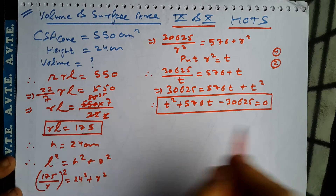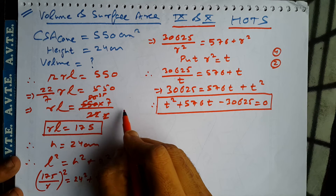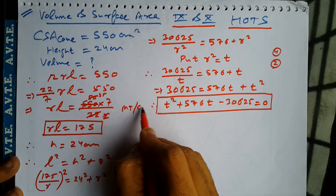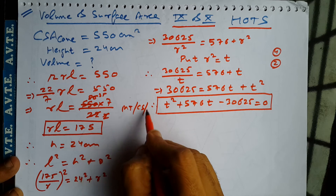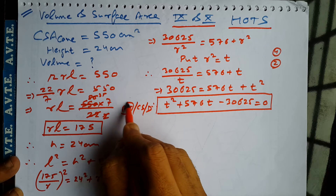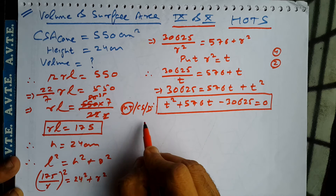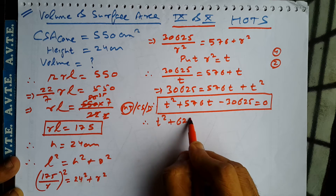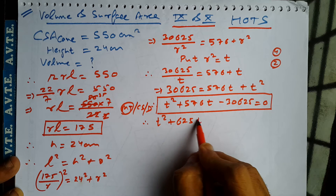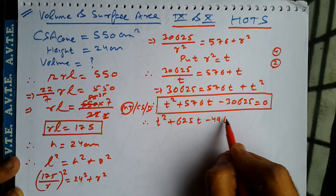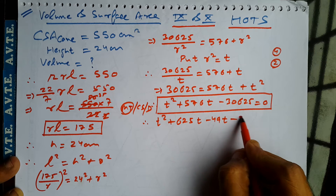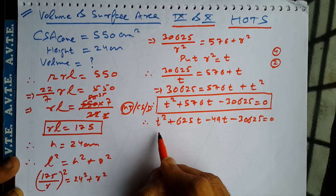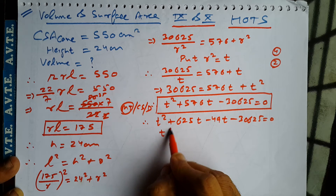We can solve this equation by either middle term, completing the square method, or D method. But for class 9th we can use only middle term. So it is T square plus 625T minus 49T minus 30625 equal to 0.